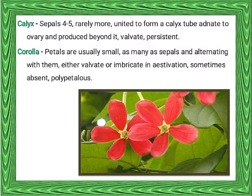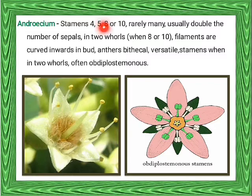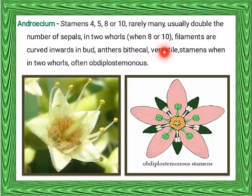Androecium: stamens 8 or 10 in number, rarely many, usually double the number of sepals, in two whorls when 8 or 10. Filaments are curved inward in the bud. Anther is bicelled, meaning the anther is made up of two cells; versatile, meaning the anther swings freely.